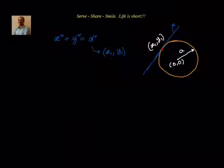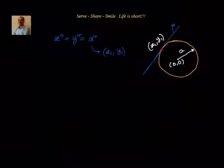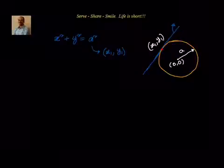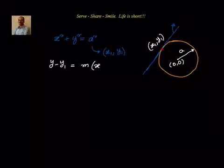Now, what we will do? First, we know that if we want to find out the equation of a line, we have a point already. So, if I am able to find out what is the slope of this line, then I can leverage the point-slope form and write the equation as y − y1 = m(x − x1).